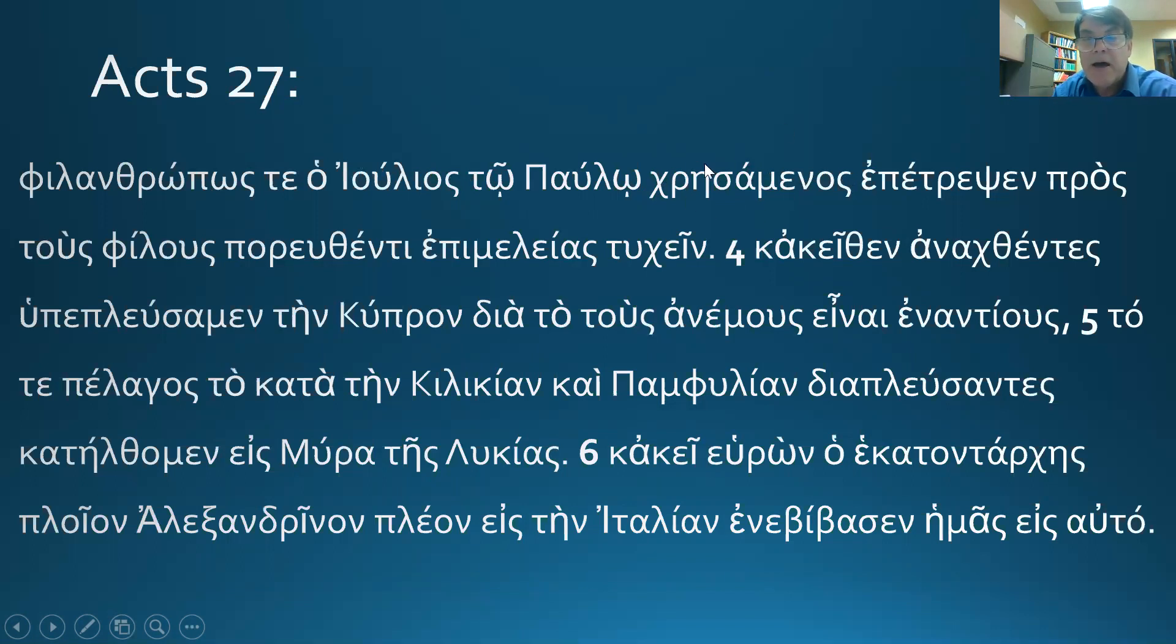So this is an aorist middle participle, but it's deponent, which means we're going to translate it active. Julius, having behaved kindly, the Omega Sigma is an L-Y ending, kindly, a kind of an adverb ending. Having behaved kindly to Paul. He allowed him to his friends, to the friends, going to obtain stuff, supplies, helps, because the Romans aren't funding Paul's meals or anything like that, as far as I know.